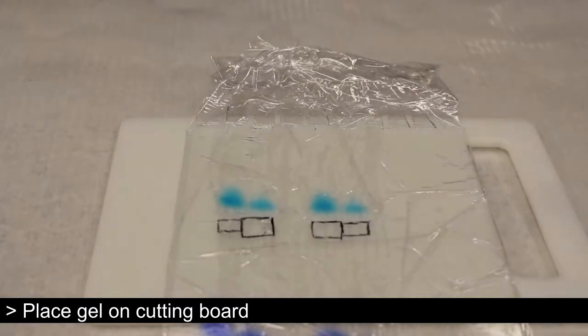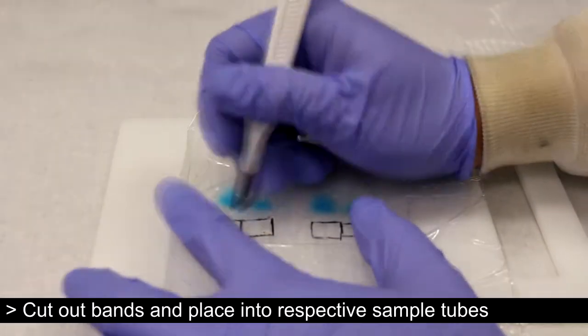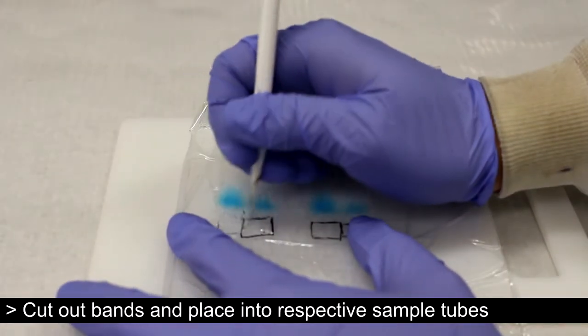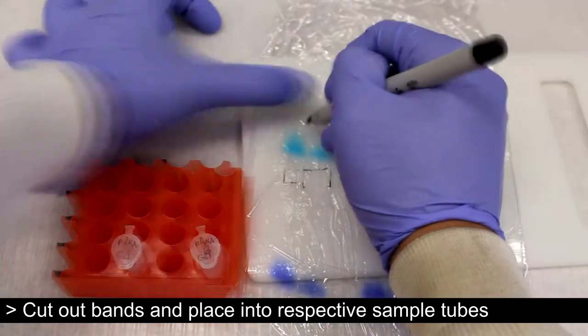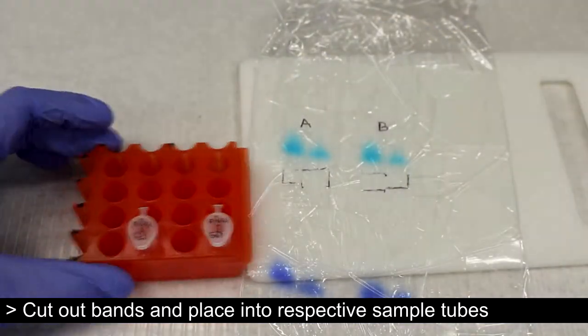The gel is then placed on a cutting board and the bands are cut out. The gel pieces are then placed into corresponding sample tubes.